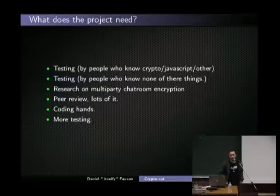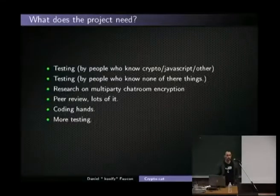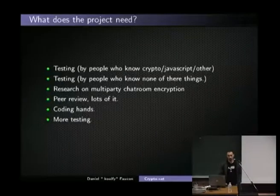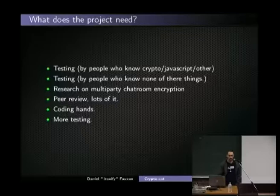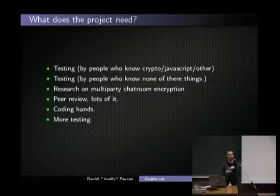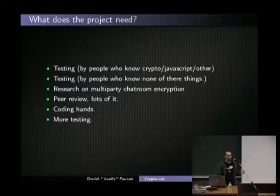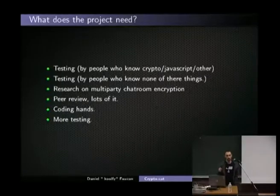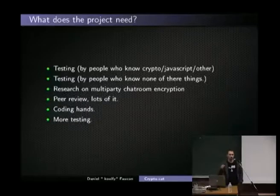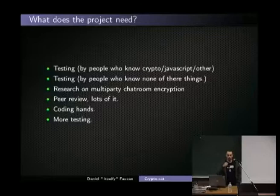So what does the project need right now? We need testing by people who know cryptography, JavaScript, and anything the project uses, for obvious reasons. And for less obvious reasons, we need testers who have no idea what encryption is, what JavaScript is, what a browser is — the most uneducated are the best. That's simply because the people we are targeting are those people, not the power users, not me, not probably you, because we already know how to use cryptographic tools. We need other people to use them, and for that we need CryptoCat to fit their needs. When regular testers like us give feedback, we do not see that things are not obvious and we are not objective.